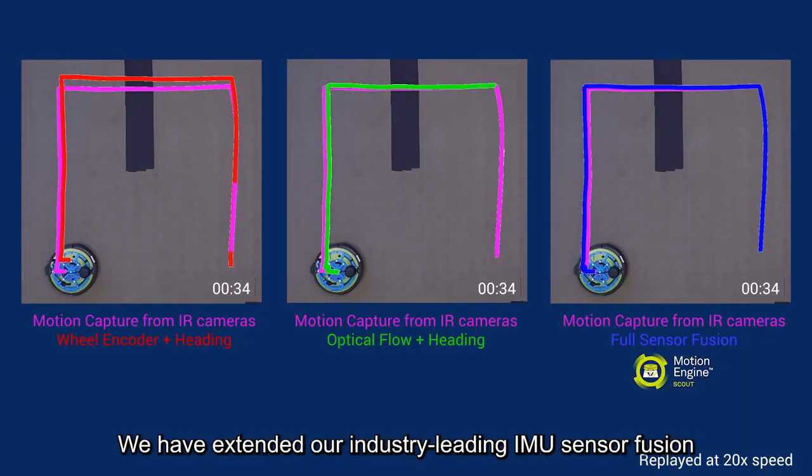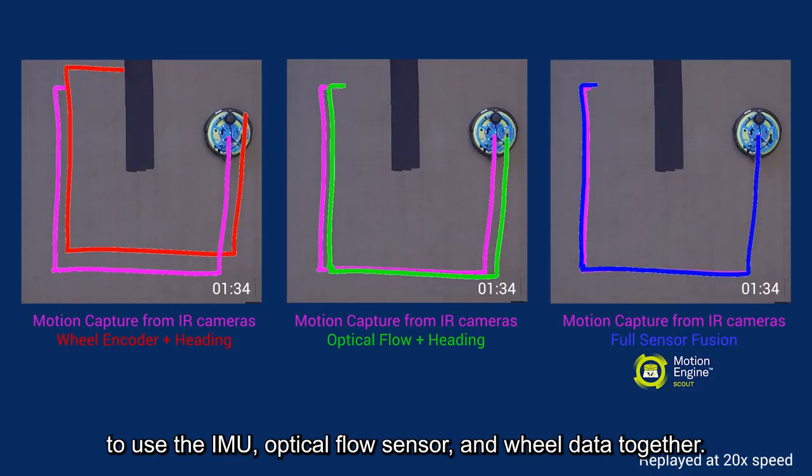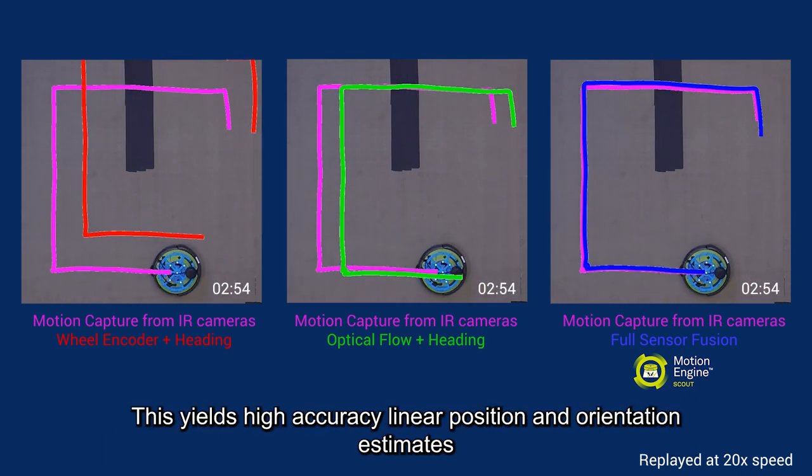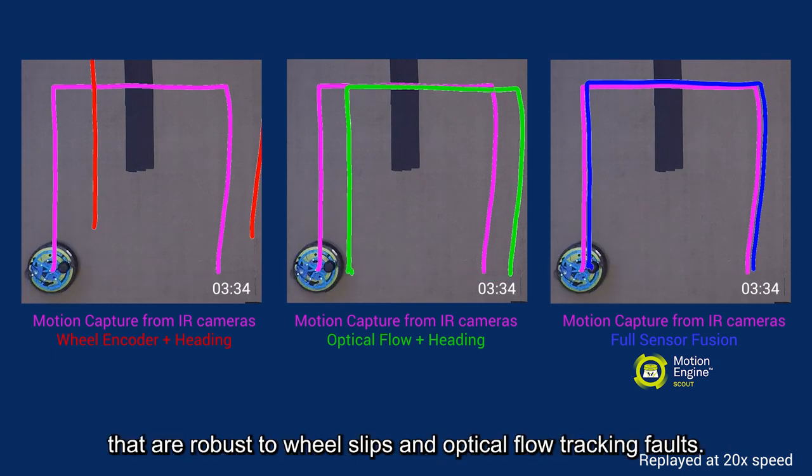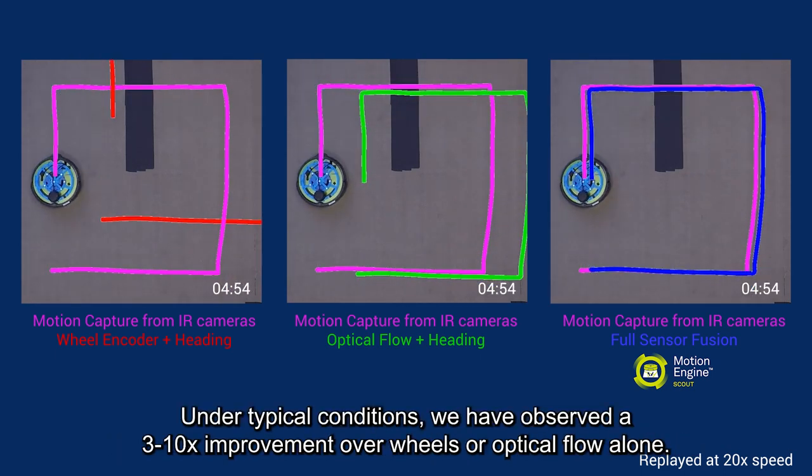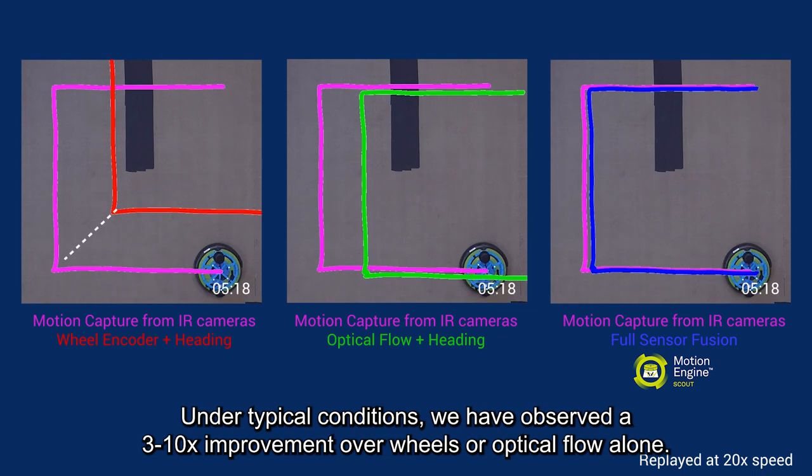We have extended our industry-leading IMU sensor fusion to use the IMU, optical flow sensor and wheel data together. This yields high-accuracy linear position and orientation estimates that are robust to wheel slips and optical flow tracking faults. Under typical conditions, we have observed a 3 to 10x improvement over wheels or optical flow alone.